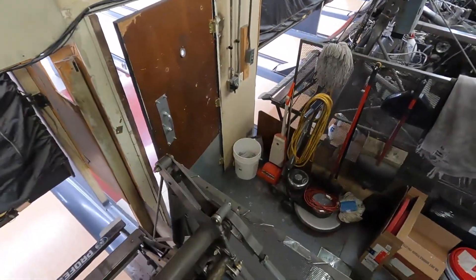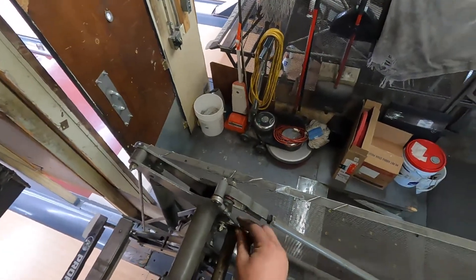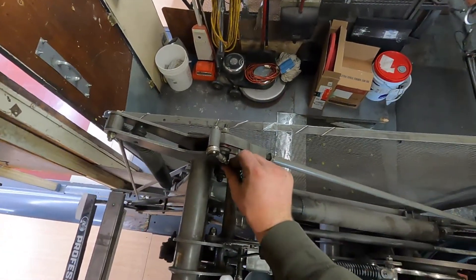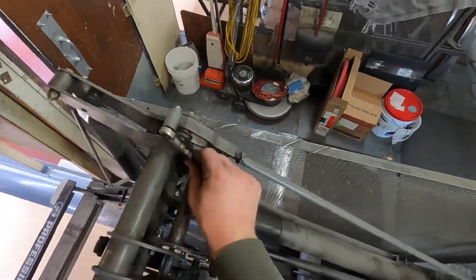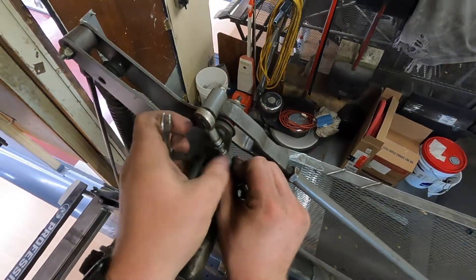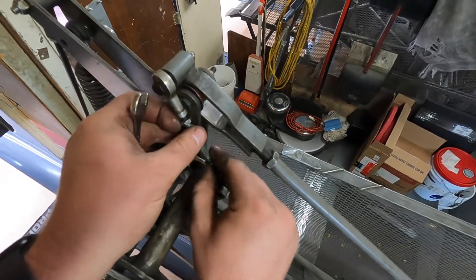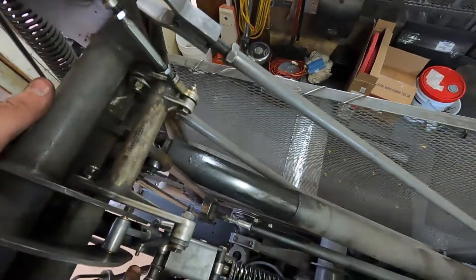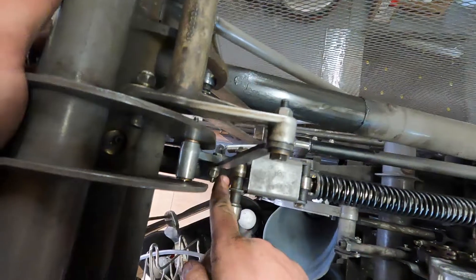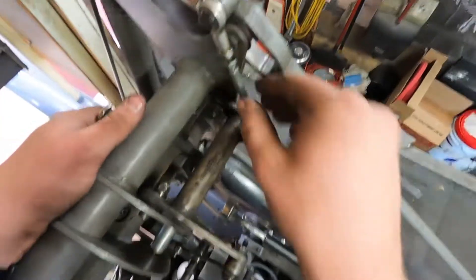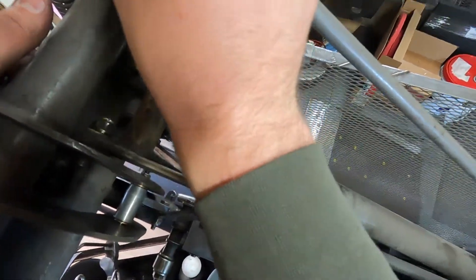So, with this installed, with your link installed, this adjustment's fairly easy. All you're needing to do is you're going to loosen the two jam nuts on your turnbuckle here. And you're going to move it until the gap here between this roller and your link is a 16th.